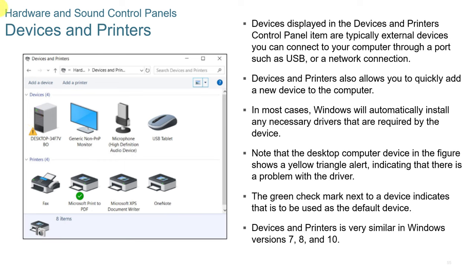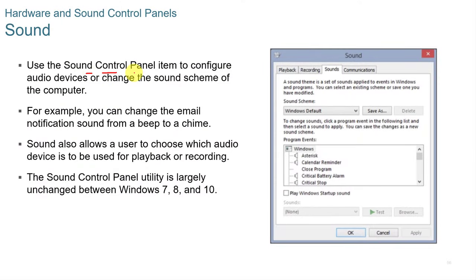Devices and Printers displays external devices connected via USB or network. Windows will automatically install necessary drivers in most cases. A yellow triangle alert indicates a driver problem; a green check mark indicates the default device. In the Sound area, you can use the Sound control panel to configure audio devices, change notification sounds, and choose which audio devices are used for playback or recording.